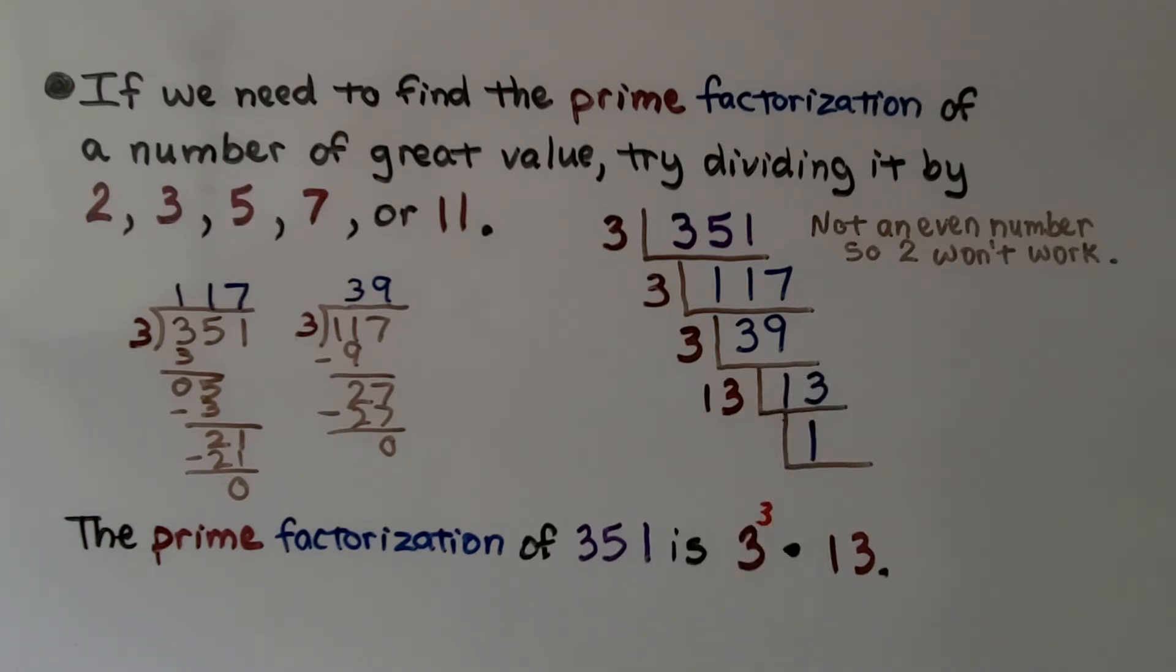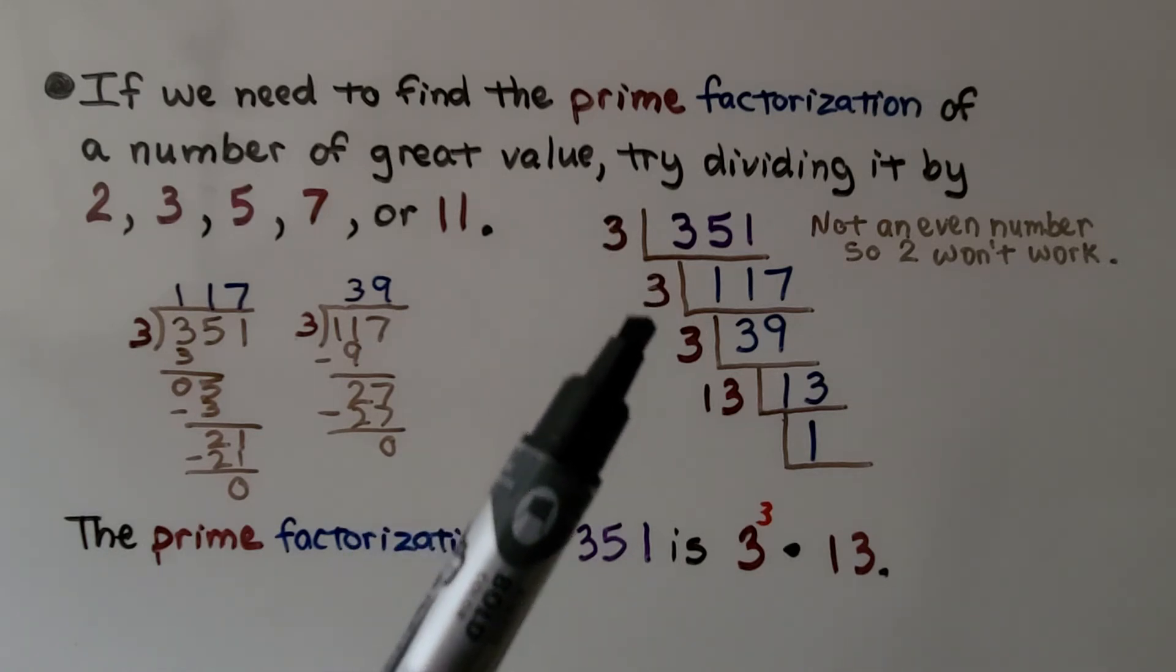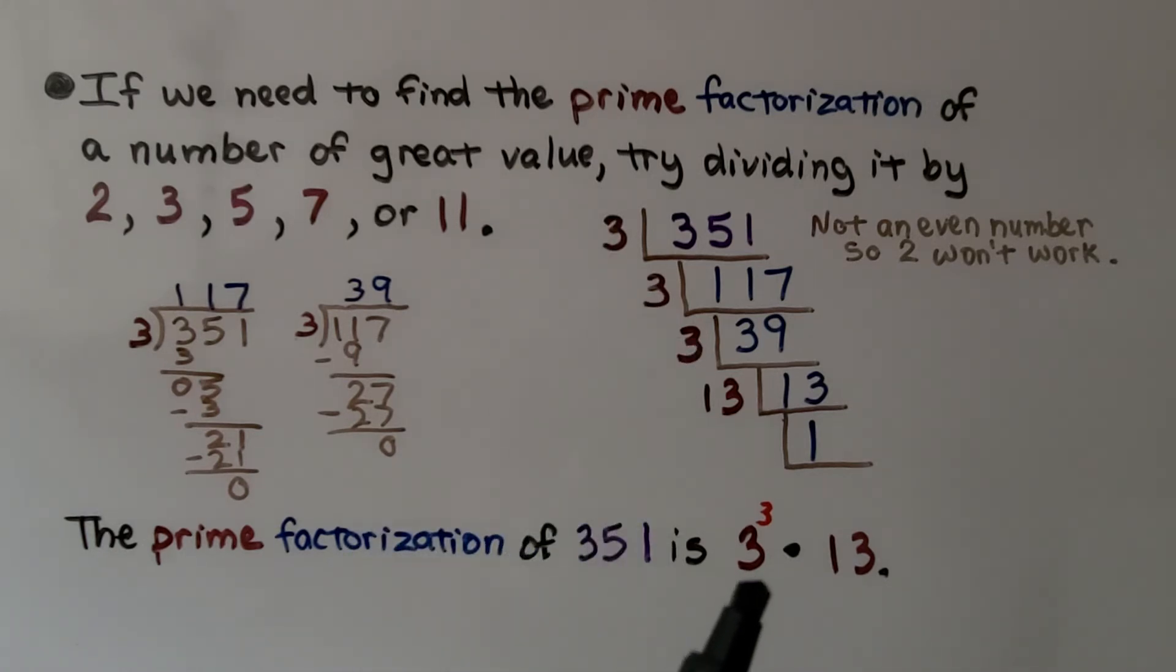What are the factors of 13? 13 and 1. So the prime factorization of 351 is we have one, two, three threes. So we have 3 raised to the third power times 13.